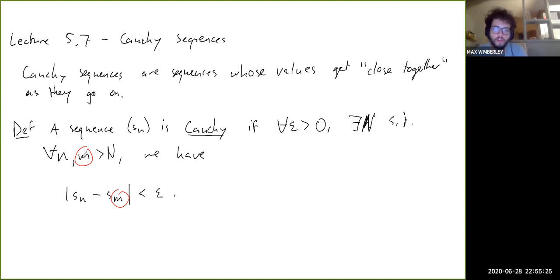And also notice that it's for an arbitrary pair of indices, which are both bigger than N, but they can be far apart from each other in the sequence. It's not just talking about the successive differences between like SN and SN plus one or whatever. It's not saying that those have to get small. It's actually saying that all of the differences after a certain point get small, which is stronger. And in fact, that brings me to the next lecture question.